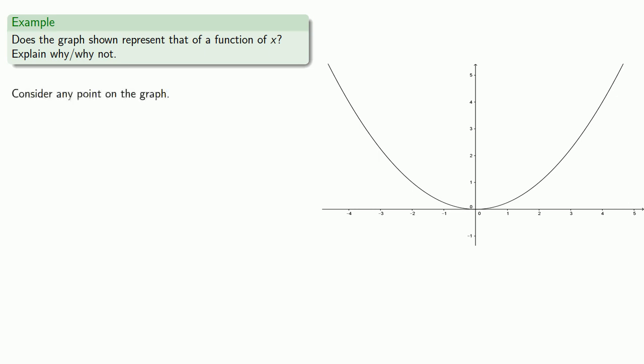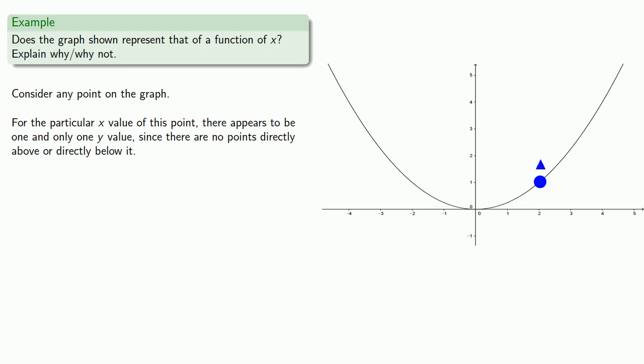Consider any point on the graph. This particular point has a particular x value. For the particular x value of this point, there appears to be one and only one y value, since there are no points directly above it or directly below it.